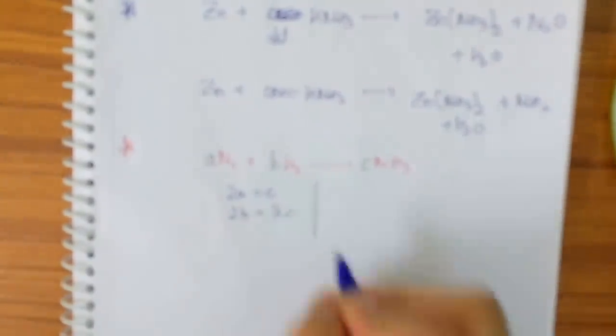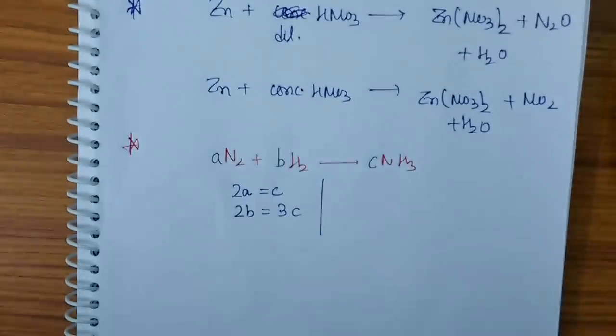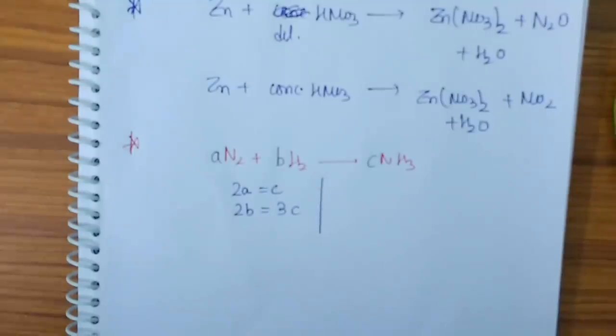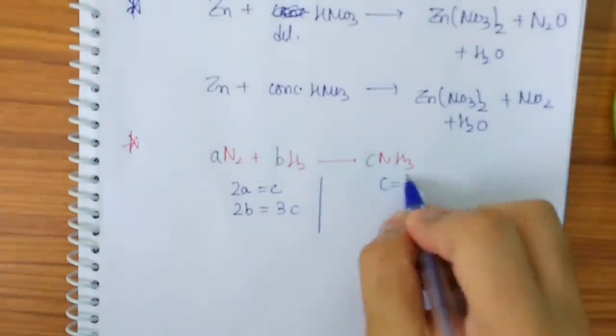So let us begin. See, how many N are here? 2A. How many N are here? C. How many H are here? 2B. How many H are on the other side? 3C. So we have got two equations. We are having three variables here actually. So what to do? Assume any one. Let me assume C to be one. You can assume two, three—these all are in ratios, so we will be getting equal values.